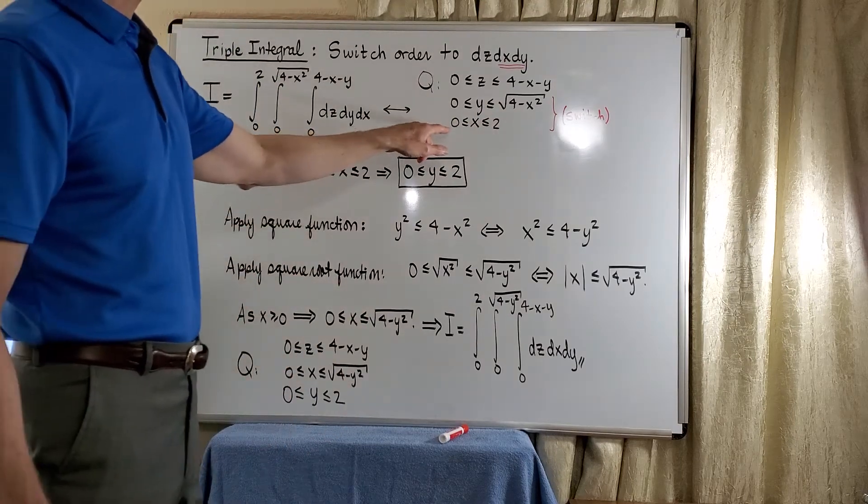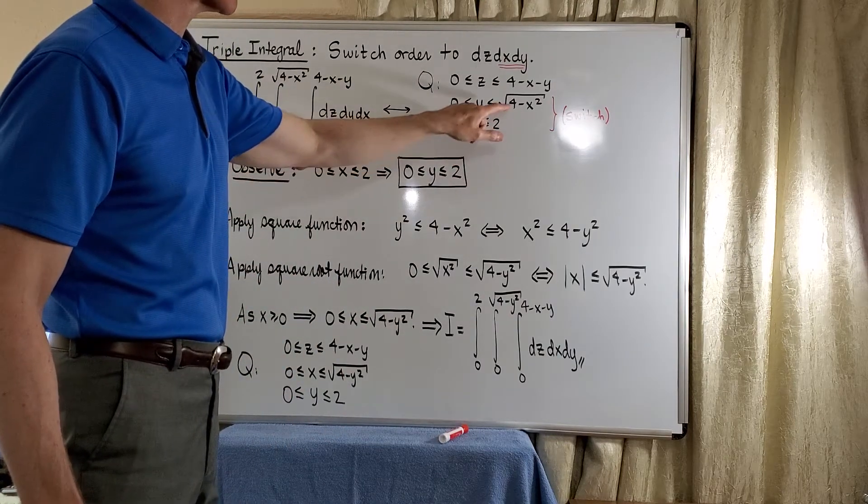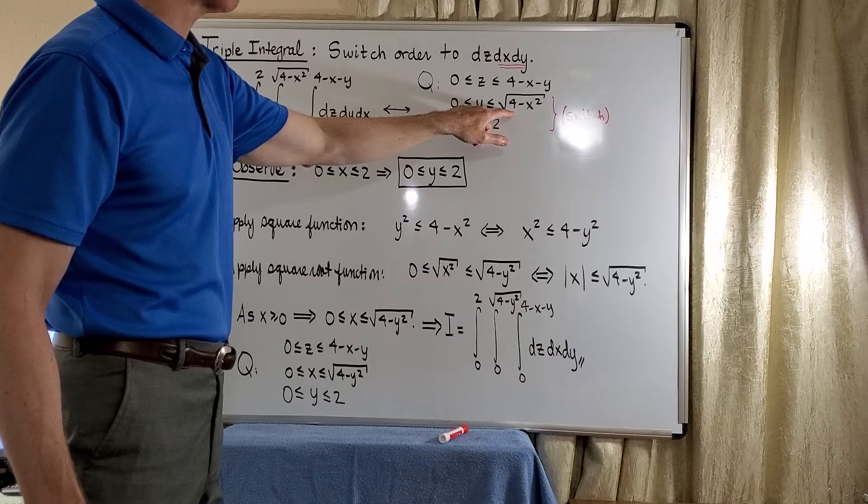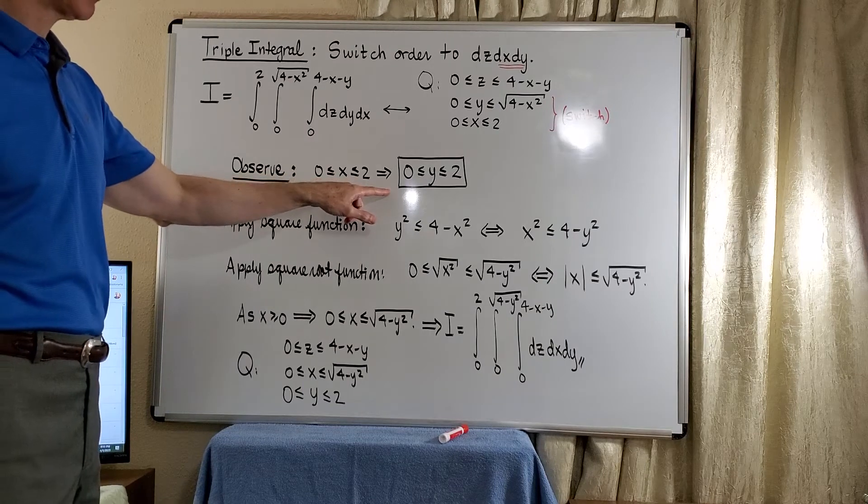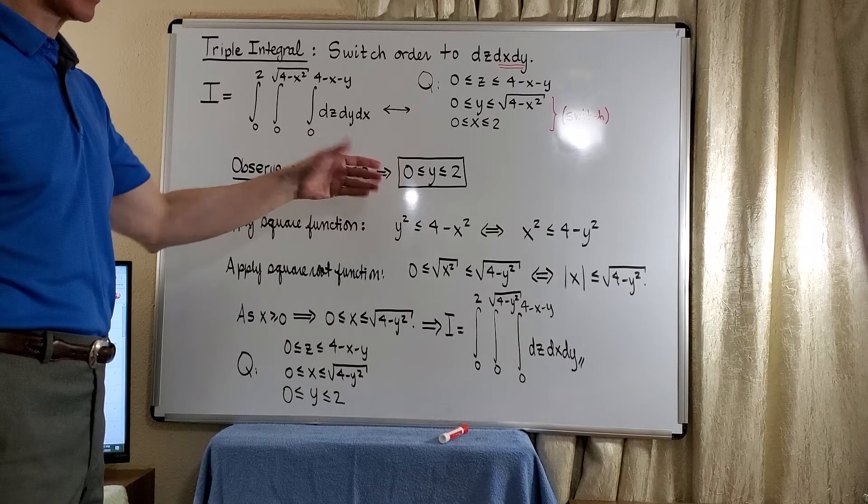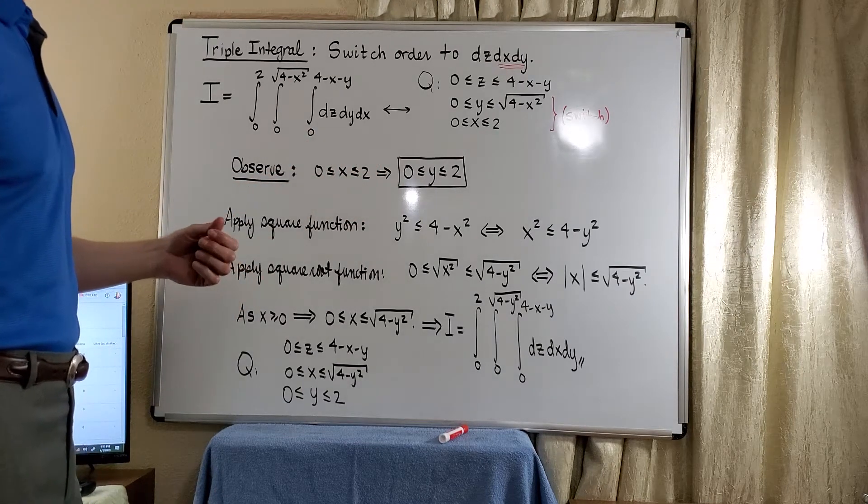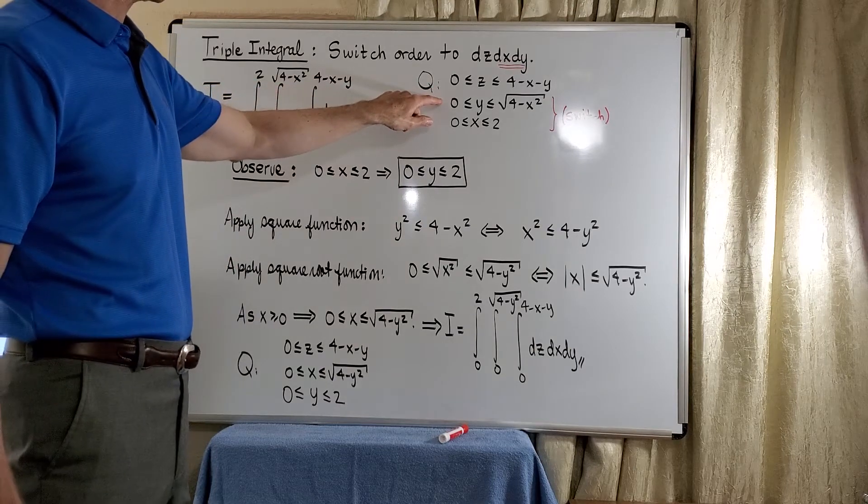Now first, we see that x runs from 0 to 2. So the most that the y can be would just be the square root of 4. So by observation, we have that y will run from 0 to 2. That's fairly straightforward. And then we need to focus on this particular inequality.